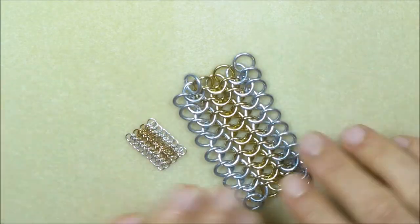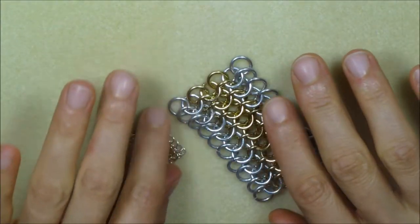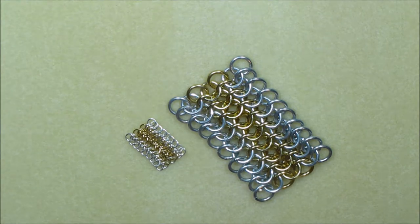This is another strip of European 4-in-1, but it's made out of 10 millimeter 14 gauge rings, which have an aspect ratio of 4.1. Even though the aspect ratios are nearly identical, 4.3 and 4.1, you can see very clearly that the ring size, the wire thickness, and the end result are wildly different.